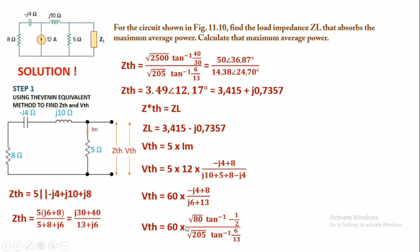We got the value is Vth equals 60 multiplied with √80 at -26.565 degrees phase angle divided by 14.31 at 24.70 degrees phase angle.